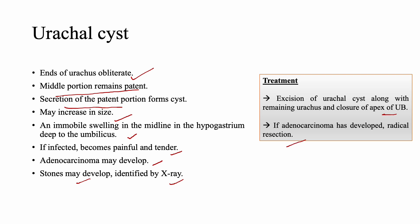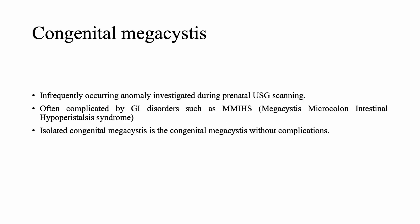This is all about persistent urachus. We have covered the two main congenital anomalies: bladder exstrophy or ectopia vesica, and persistent urachus with its different forms.